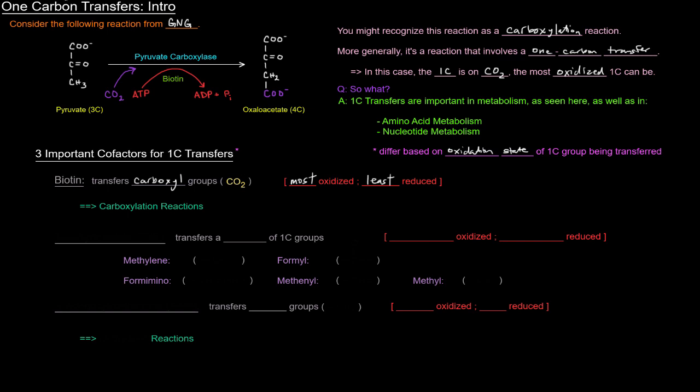That carbon dioxide, that carbon has four bonds to oxygen. If you draw carbon dioxide's Lewis structure, it looks like that, right? So four bonds that's as oxidized as a one carbon group can be. So biotin is important in carboxylation reactions, or transferring one carbon groups in their most oxidized form.